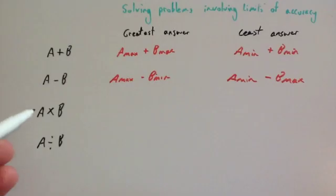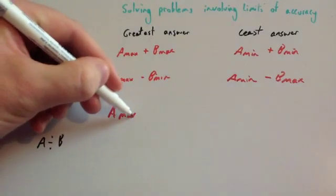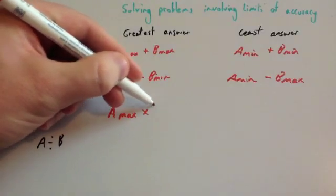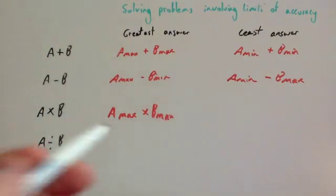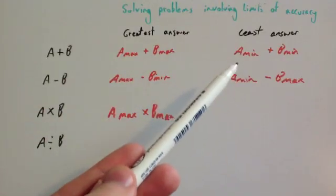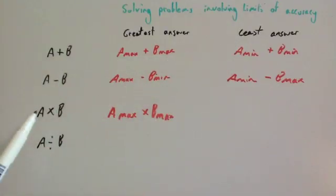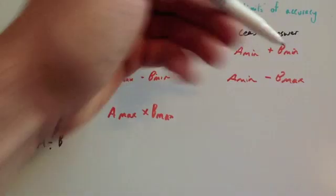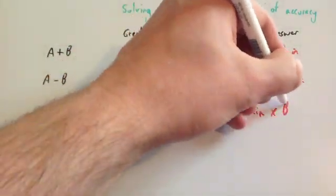If you're going to multiply them, that's quite straightforward. If you want the biggest answer you would times the two upper bounds: a max times b max. Because whenever you're multiplying, you'd want to multiply the two biggest numbers to get the biggest answer. And likewise for the least answer, you'd want to multiply the two lower bounds: a min times b min.